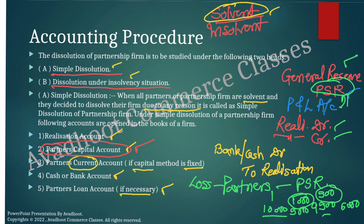If loss is there, transfer it to partner's capital account debit side. If profit is there, transfer to partner's capital account credit side. Then close the partner's capital account — all partners are solvent. If deficiency arises, say 500, it is considered bought by that particular partner: bank or cash account debit. If credit side is more and debit side is less, we make payment to that partner — partner's capital account debit to cash or bank account. Cash and bank account must tally.